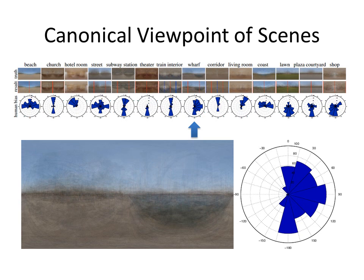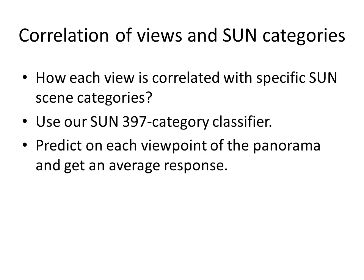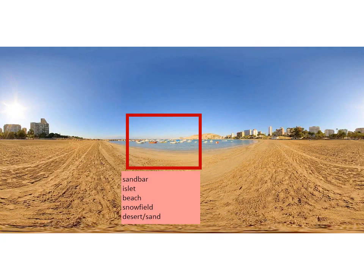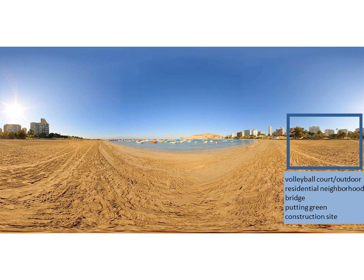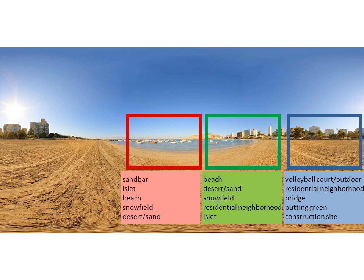The wharf category also shows a strong bias towards views which show part of the water. Next, we look at how different viewpoints within a panoramic representation correlate with specific Sun scene categories. We train a classifier on 397 categories from the Sun database and predict on viewpoint images sampled from the panoramas. Here are the top five highest scoring Sun categories for a viewpoint in the beach place category — it makes sense to predict sandbar, islet, and beach. Here is another view: with no water visible, the predicted categories change quite a lot, with top predictions of volleyball court, residential neighborhood, and construction site. And in the middle view, we have both beach and residential neighborhood in the top predictions.